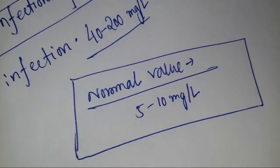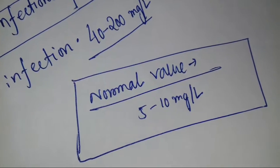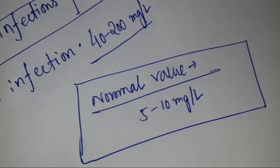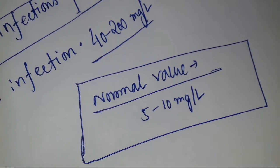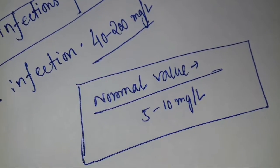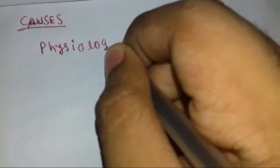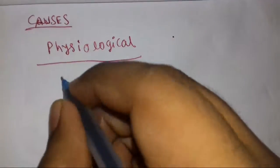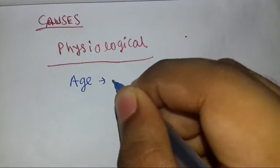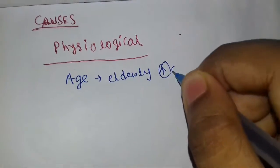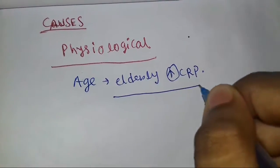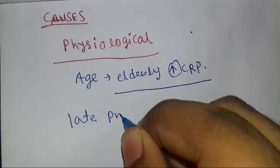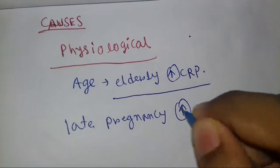The normal value of CRP in a healthy person's serum is around 5 to 10 milligrams per liter. There are physiological and pathological causes of increased CRP. The physiological causes include age — in elderly people the CRP level is increased — and late pregnancy, where elevated CRP levels can also be seen.